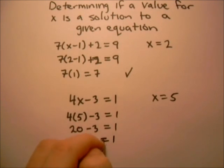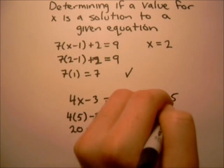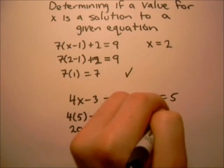But 17 does not equal 1, so this is not a true statement. And so x equals 5 is not a solution.